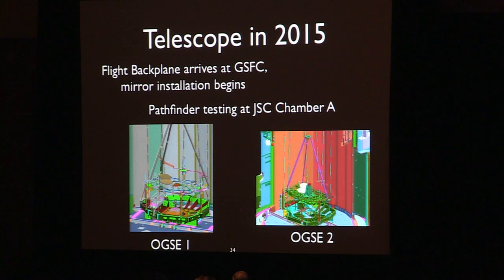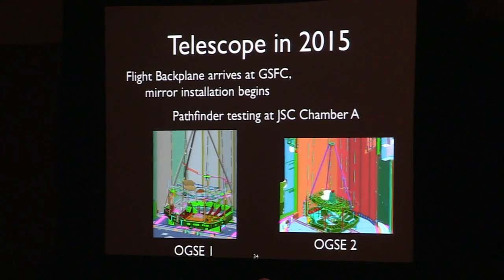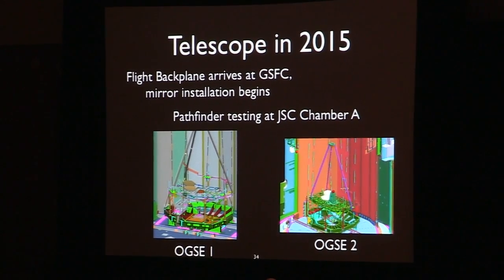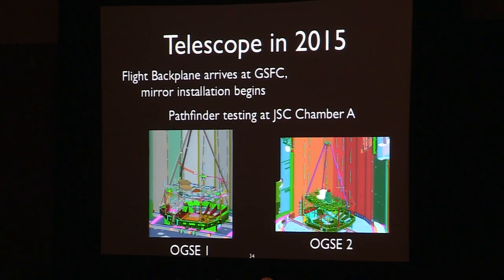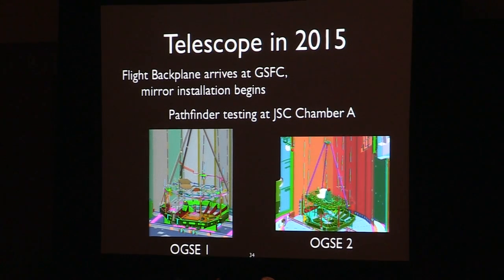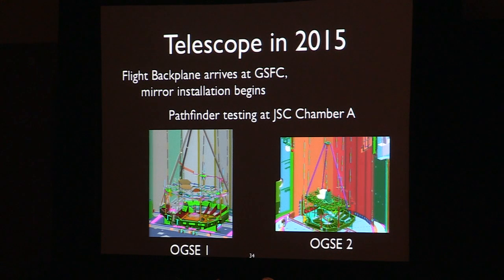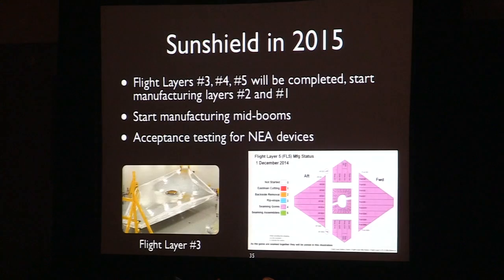The work going on at Johnson Space Center involves two configurations. The OGSE — Optical Ground Support Equipment — testing has the Pathfinder being tested early in the year, basically to see how it changes shape as the temperature changes in the chamber. Later in the year, the Aft Optics System, containing the flight tertiary mirror and fine steering mirror, are installed along with a beam image analyzer, so you're actually testing the system optically. Those are two big tests occurring at Johnson.